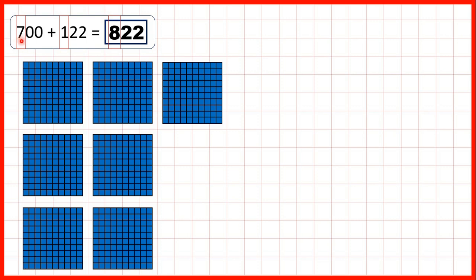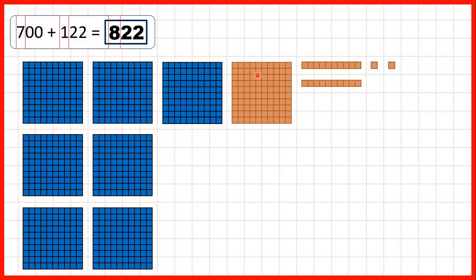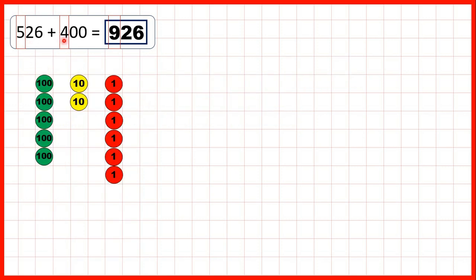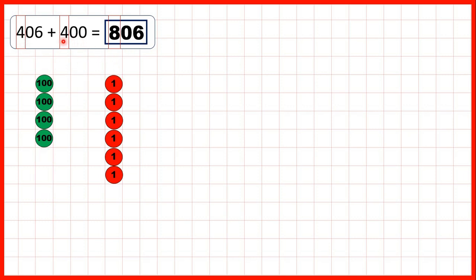Then we had 700 plus 122 — that's adding 100, two tens and two ones. We have eight hundreds altogether and we still have the two tens and two ones that we added in our answer, because we didn't start with any tens or ones. We could also show the addition using place value counters. For the first question we just add four hundreds counters to leave us with nine as our hundreds digit, and the tens and ones have stayed the same.